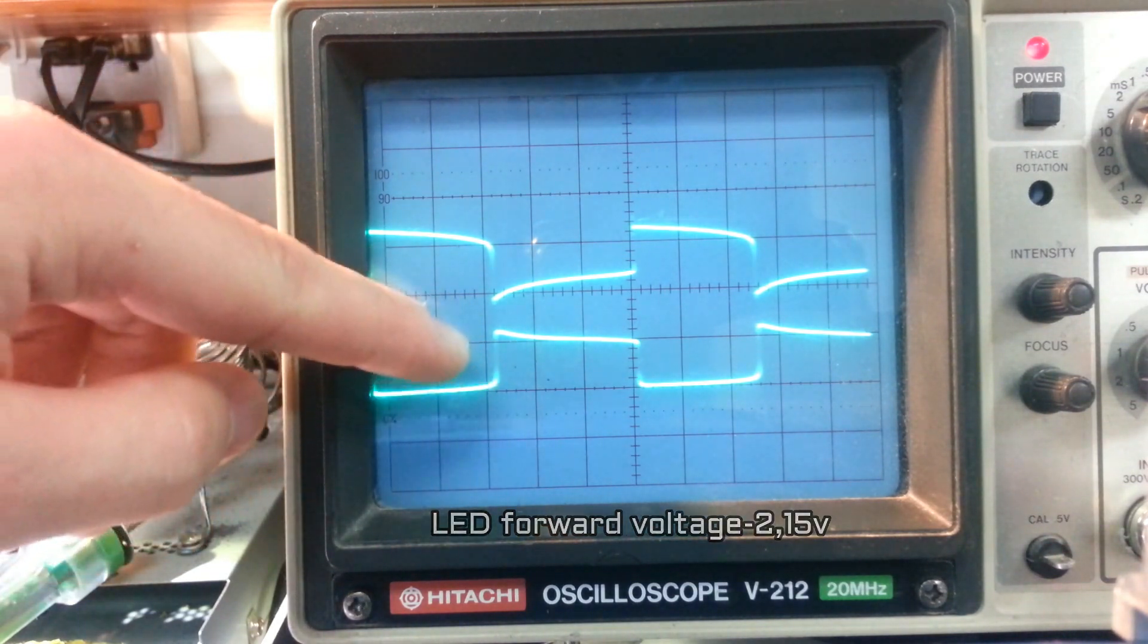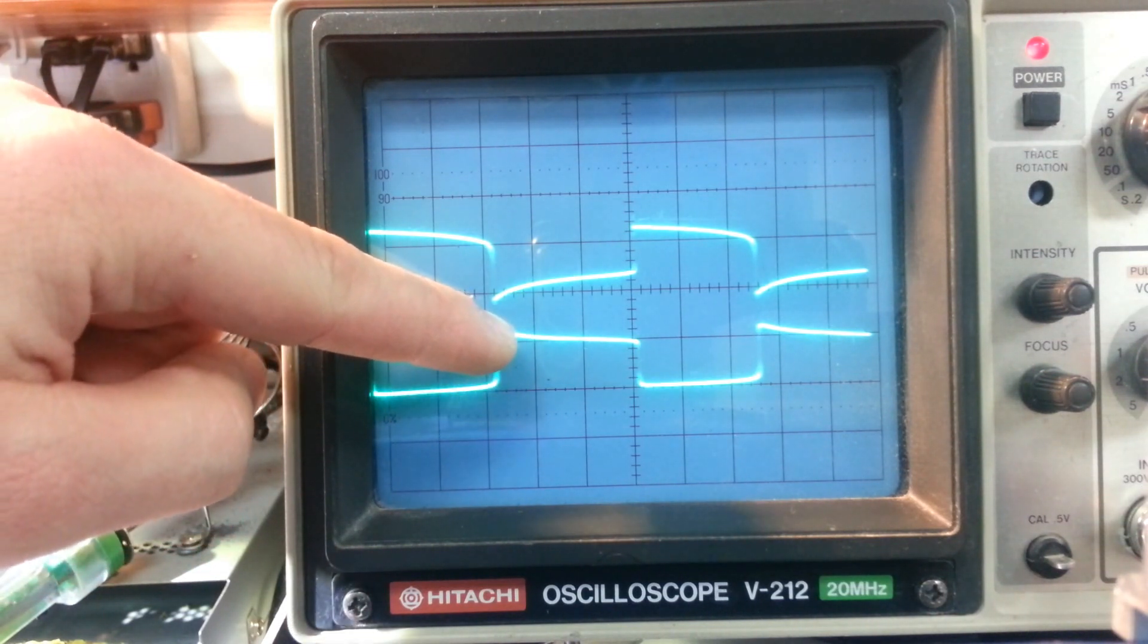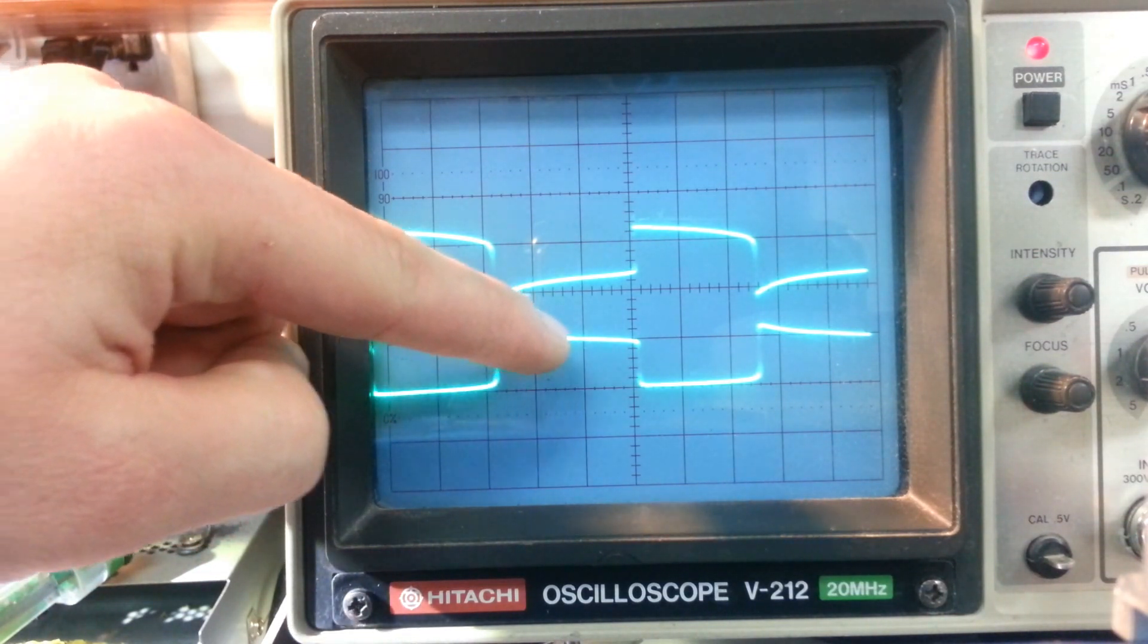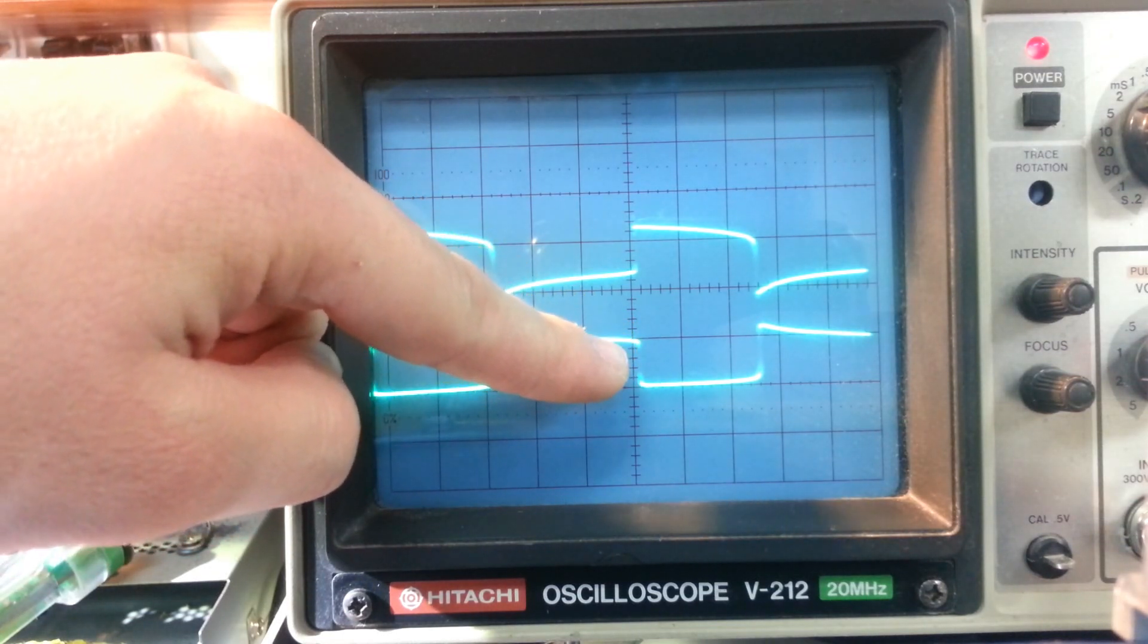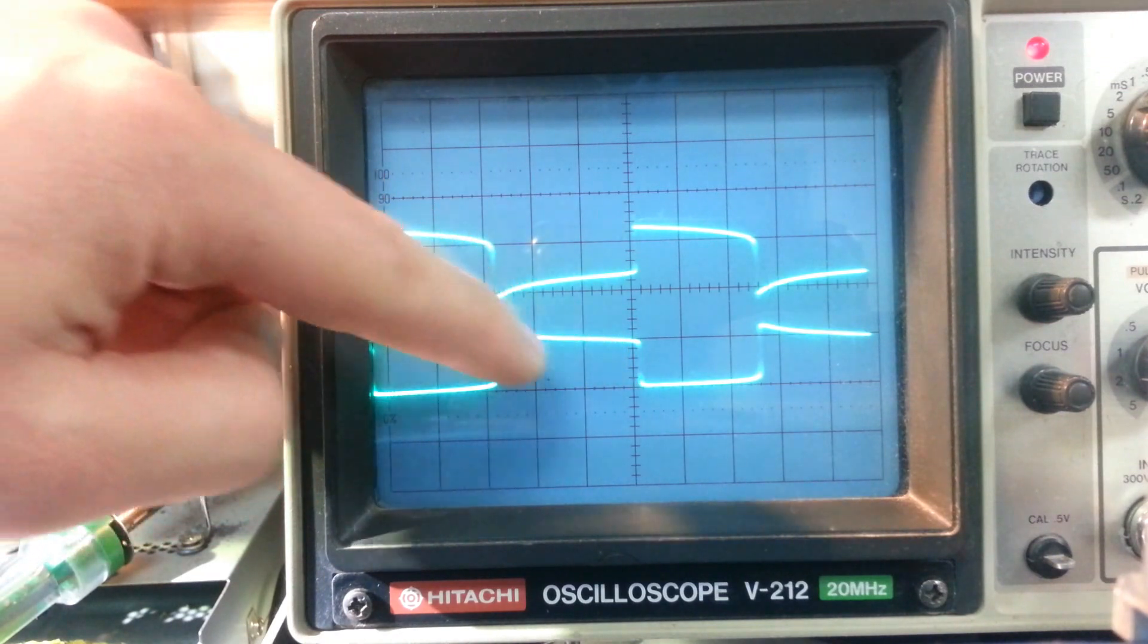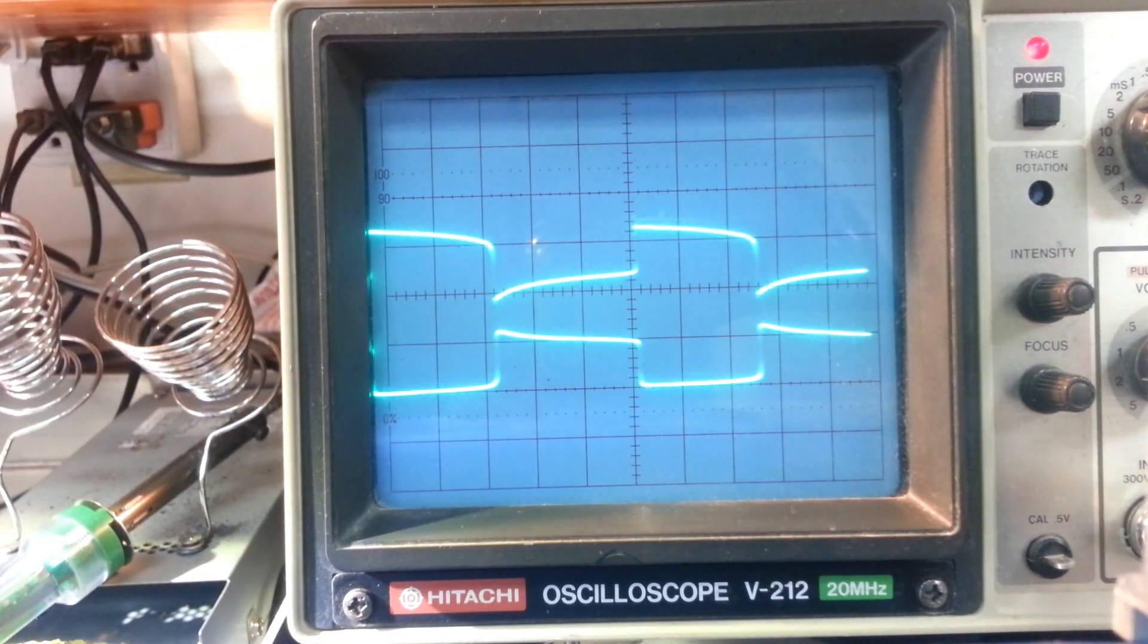So when the transistor closes, we get that spike. Then the LED consumes all of the energy stored in the inductor. And once all of that happens, the cycle starts again and it oscillates.